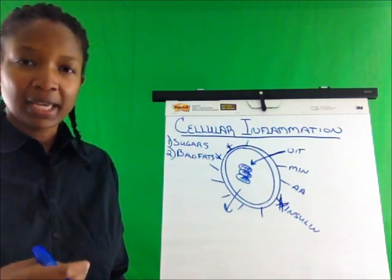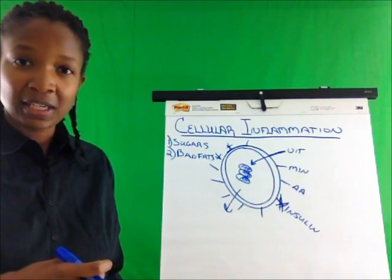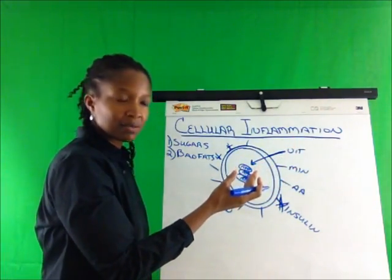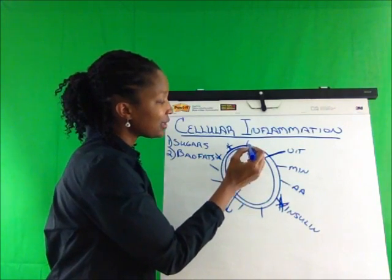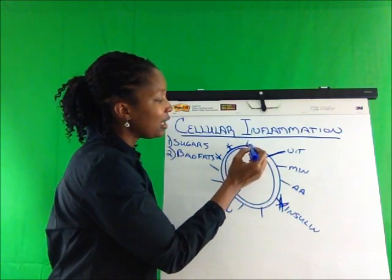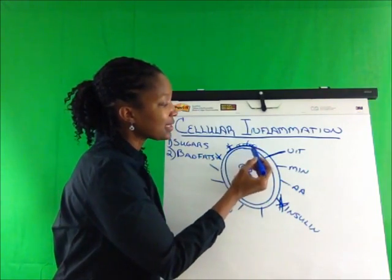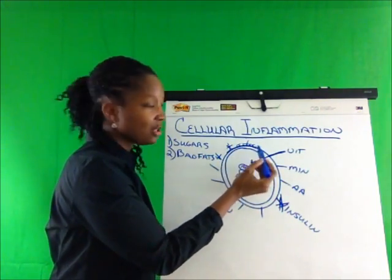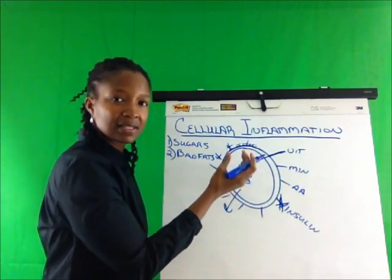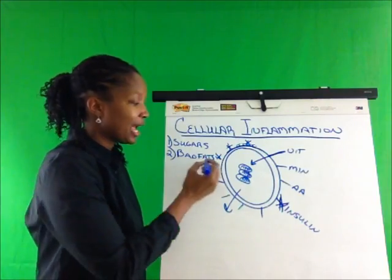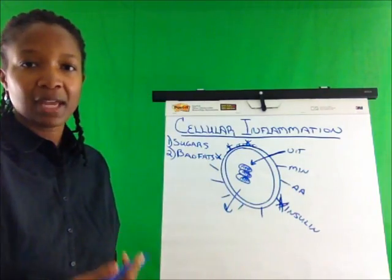And let me share with you what is going on with the body when you ingest these chemicals. What happens is the body brings in this material but the cell membrane cannot bring it into the cell. So instead, it suffocates that cell receptor. It blunts the cell. That receptor dies. And that is what happens when you eat these bad fats.